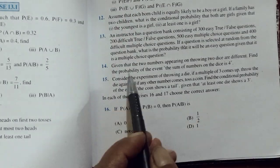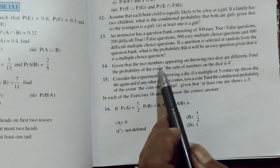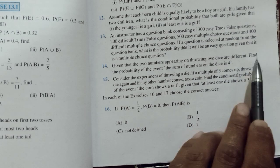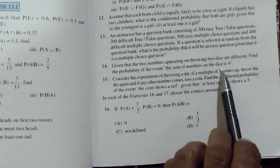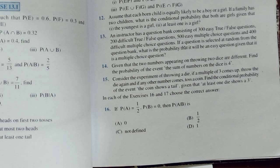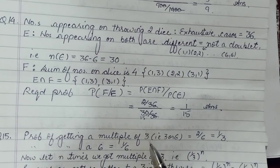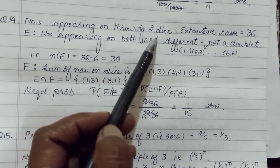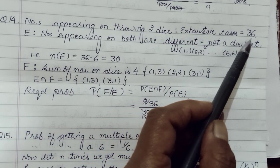The 14th question says: given that two numbers appearing on throwing two dice are different, find the probability of the event that the sum of the numbers on the dice is 4. So we are throwing a pair of dice. We have done this kind of event a number of times. We know there are total 36 outcomes — 6 into 6.